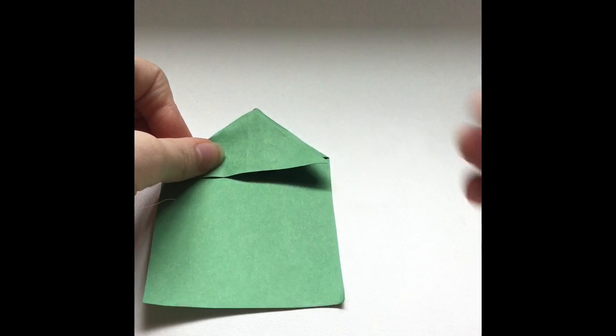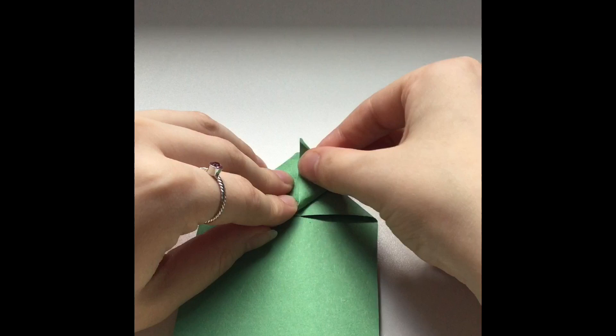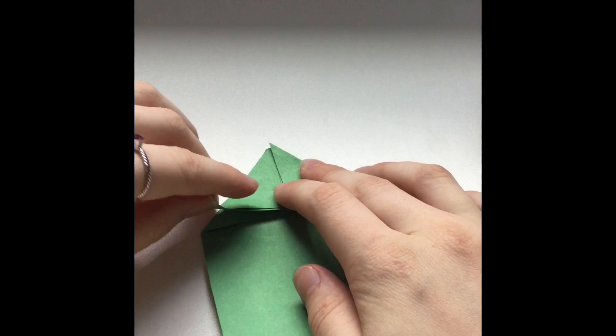So once you fold your triangle it should look like this. There are these two flaps on the front half of the paper. You are going to take them and fold them towards the center of that triangle so it looks like a little diamond. And then you are going to do the same thing on the other side.